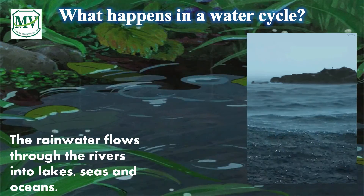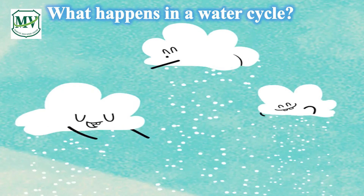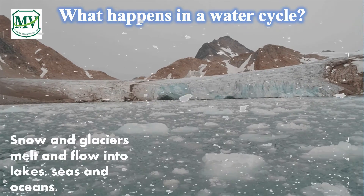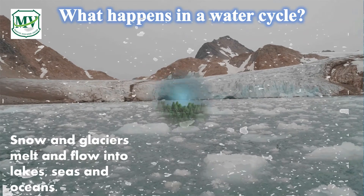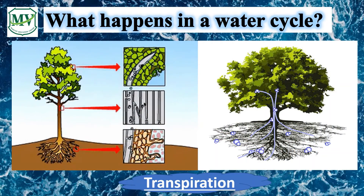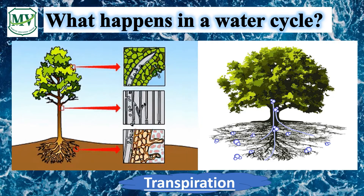The rainwater flows through the rivers into lakes, seas, and oceans, as you can see on your screen. Snow and glaciers melt and flow into lakes, seas, and oceans also. Due to gravity, the water from the land's surface seeps into the ground and becomes groundwater. We have another important process where plants absorb water from the ground through their roots, then plants lose water from their leaves as water vapor — this process is called transpiration.